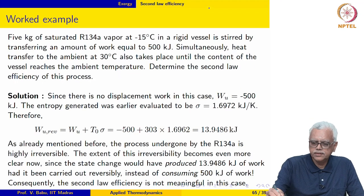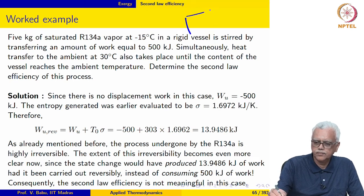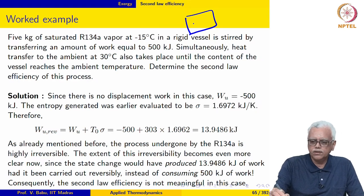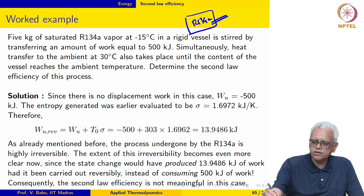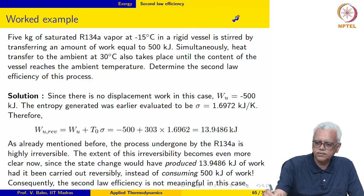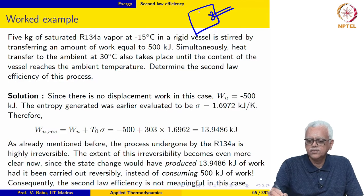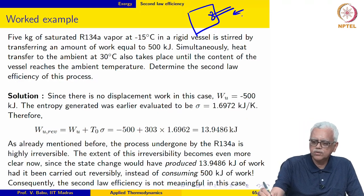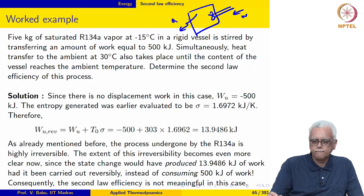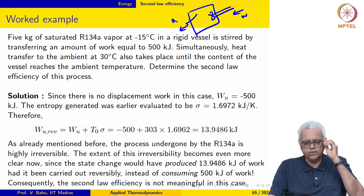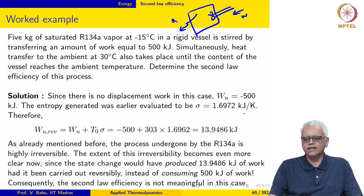The next example: we have 5 kg of saturated R134a at minus 15 degrees Celsius in a rigid vessel, and this is stirred by means of a stirrer. We have R134a inside and a certain amount of work is transferred to it. The R134a vapor is initially at minus 15 degrees Celsius. You stir the vessel, and simultaneously heat transfer to the ambient also takes place. The ambient is given to be at 30 degrees Celsius. We are asked to calculate the second law efficiency for this process.